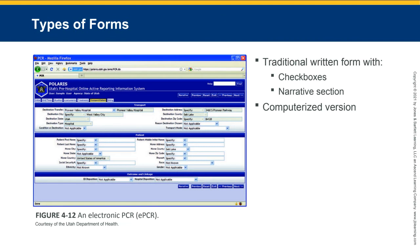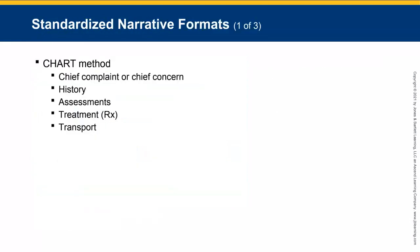There are traditional written forms with checkboxes and a narrative section, and the computerized version. Standardized narrative formats: your organization will decide on the approach. It can be the CHART method, chronological order (beginning to end), or the SOAP method. Whichever your organization decides on, use it consistently — it needs to be a standardized approach across all staff.